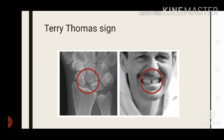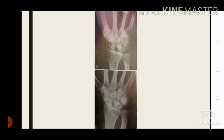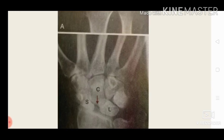When the scapholunate ligament is injured, the scaphoid moves into flexion and the lunate and triquetrum move into extension, creating a gap between the scaphoid and lunate known as the Terry Thomas sign — named after the English comedian. The gap formed between the scaphoid and the extended lunate, with the capitate migrating into that gap, is known as Scapholunate Advanced Collapse, or SLAC wrist.